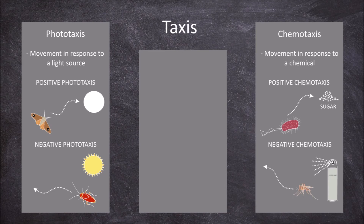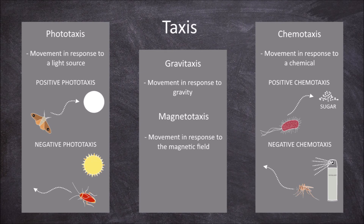There are many other forms of taxis movement. For example, gravitaxis is the innate directional movement of an organism in response to gravity. Magnetotaxis is movement in relation to the magnetic field. Rheotaxis is directional movement in relation to an air or water current, where some fish have been found to move innately towards where the current is stronger, whereas others move away from the current.